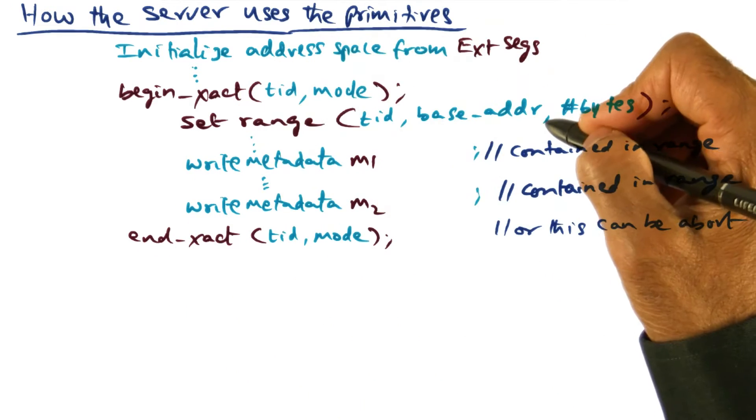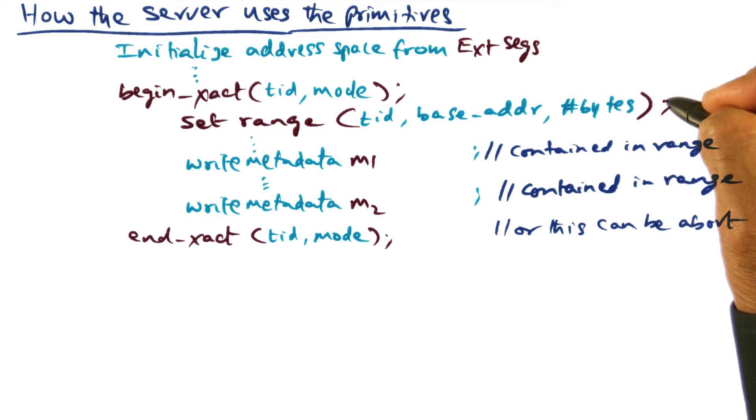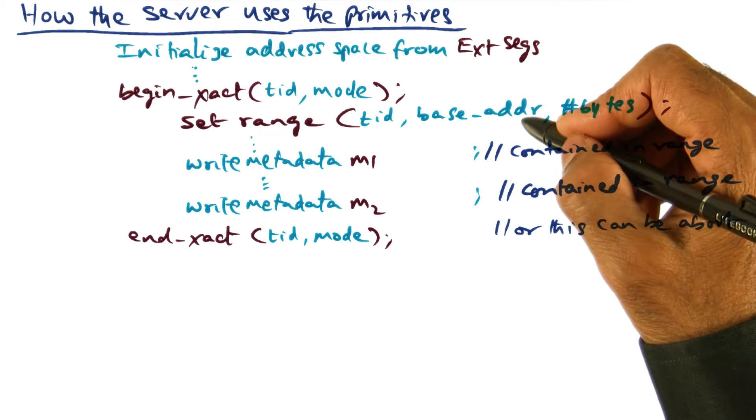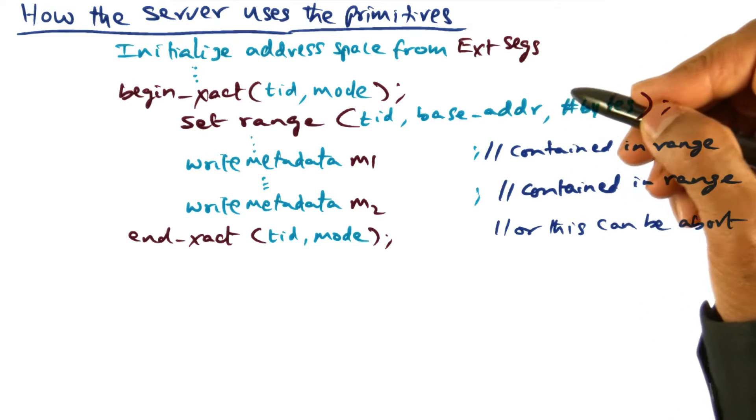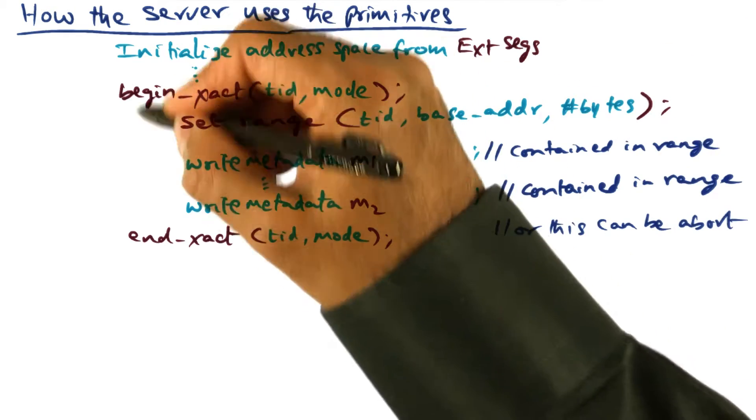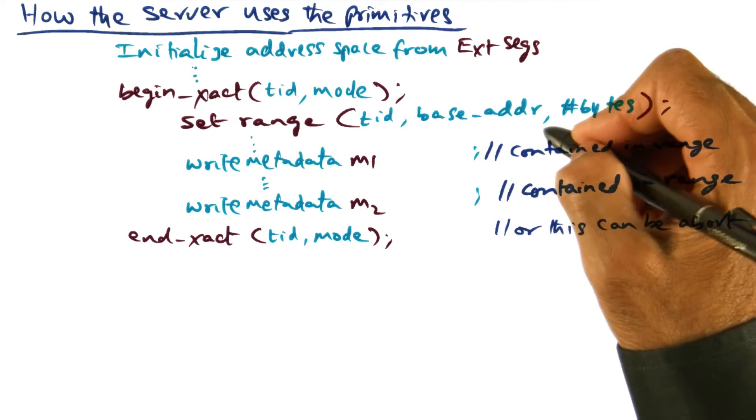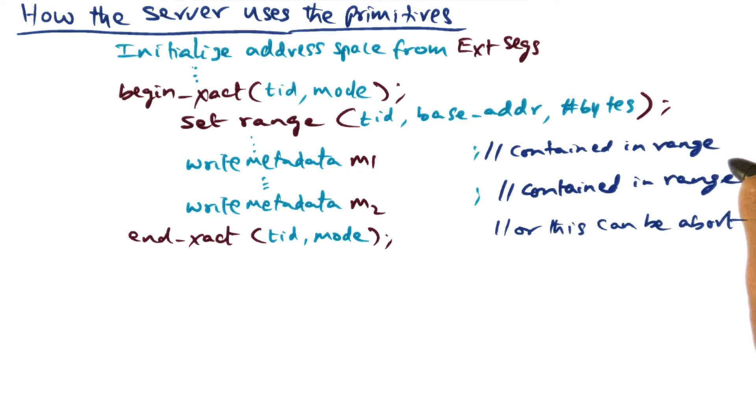And within that, the first thing they would do is set the range to indicate what is the block of contiguous addresses that they plan to modify in this critical section. And of course this block of addresses should be contained in the range that has been mapped to an external data segment.